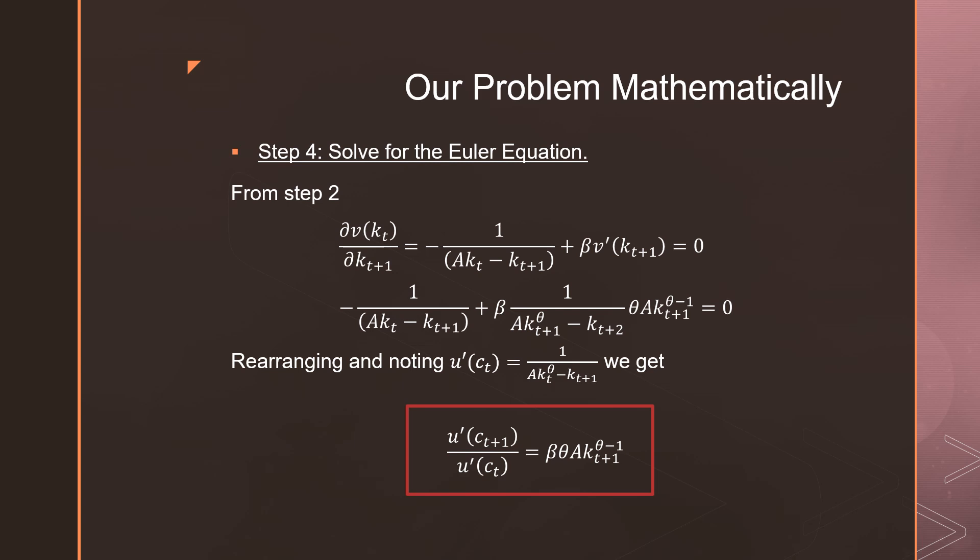If we go and we plug in our results from Benveniste-Scheinkman theorem and noting the fact that our marginal utility from consumption in time t is as follows, we go and we get our Euler equation, which is equal to beta theta a kt plus 1 raised to the power of theta minus 1. So that's how you solve for the Euler equation using a Bellman equation for a dynamic programming problem.